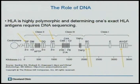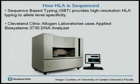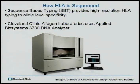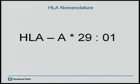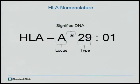For the main purposes of transplant medicine, we look at the locations of class 1 and class 2, specifically A, B, C, DRB, DQB, and DPB. How do we investigate the DNA to determine what A is or what B is? It's something known as sequence-based typing, and that provides the high resolution where we get down to the allele level. At the Cleveland Clinic Allergen Laboratories, we use a special biosystems DNA analyzer seen here. HLA is very complex and has just as complex a nomenclature. In that DNA strand, we have the locus — this one's A. The codon signifies DNA, and then we have the type 29, and then the 01 after that type is the allele specificity.